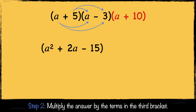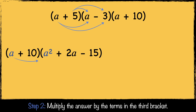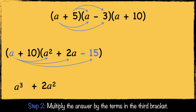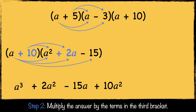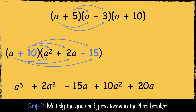Now we're on to step two, where we multiply the answer by the terms in the third bracket. It's easier to place the shortest bracket at the start. So a multiplied by a squared is a cubed, a multiplied by 2a is 2a squared, and a multiplied by minus 15 is minus 15a. Then we multiply 10 by a squared, which is 10a squared. Then 10 multiplied by 2a gives us 20a, and 10 multiplied by minus 15 is minus 150.